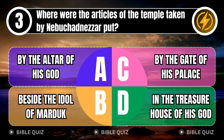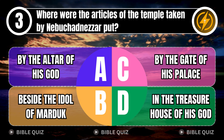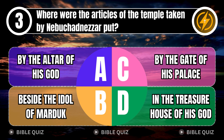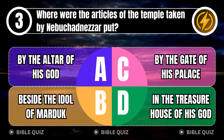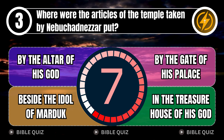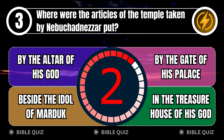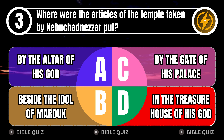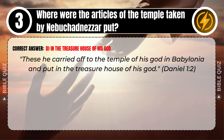Question 3: Where were the articles of the temple taken by Nebuchadnezzar put? A. By the altar of his God. B. Beside the idol of Marduk. C. By the gate of his palace. D. In the treasure house of his God. Correct answer: D. In the treasure house of his God. Nebuchadnezzar put them in the temple of his God in Babylonia, in the treasure house of his God. Daniel 1 verse 2.